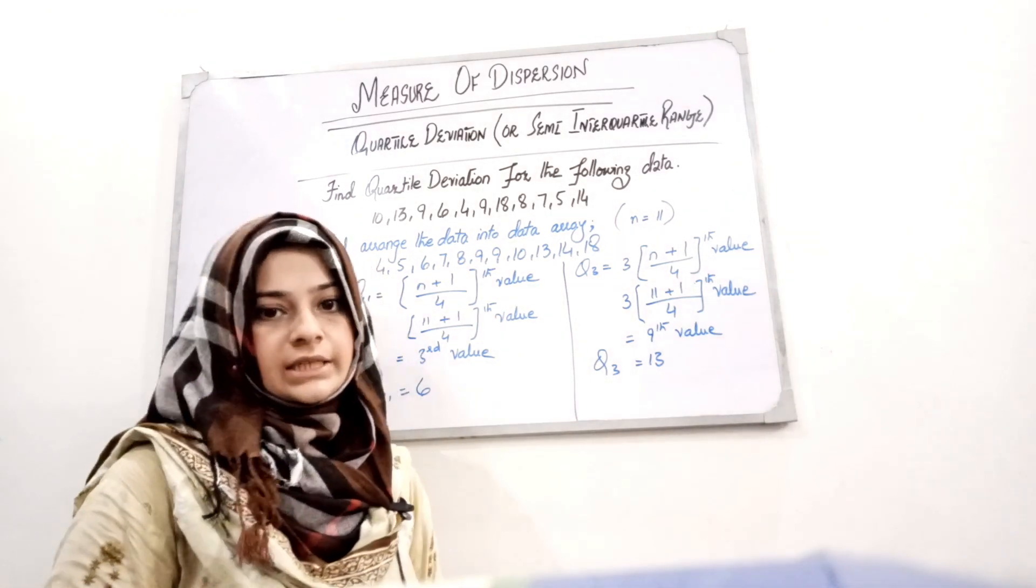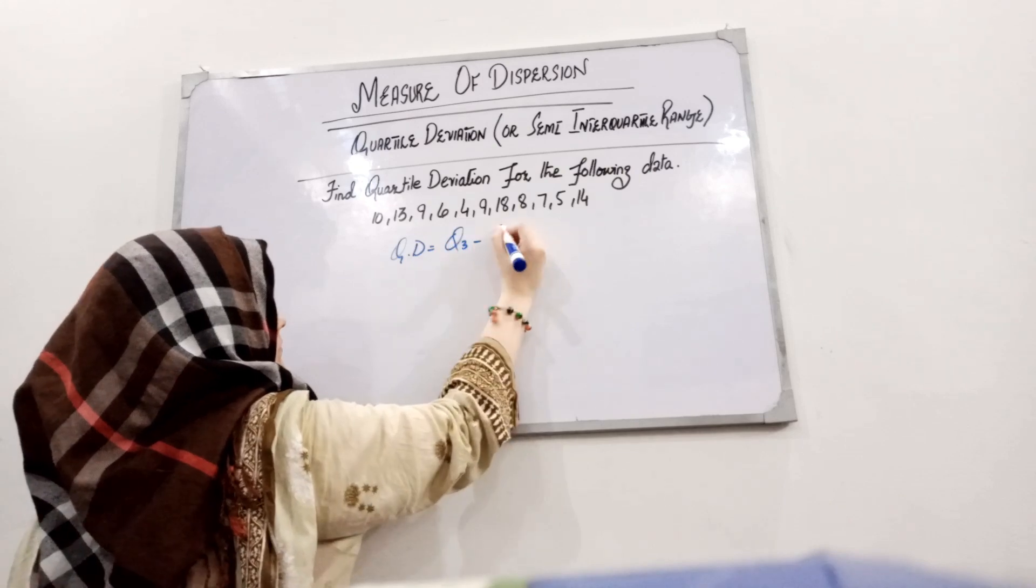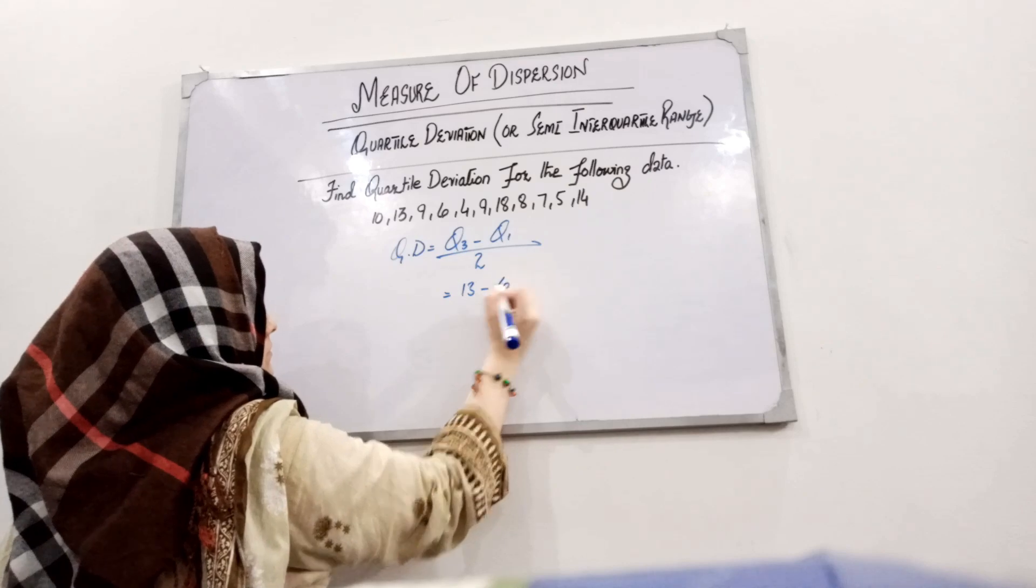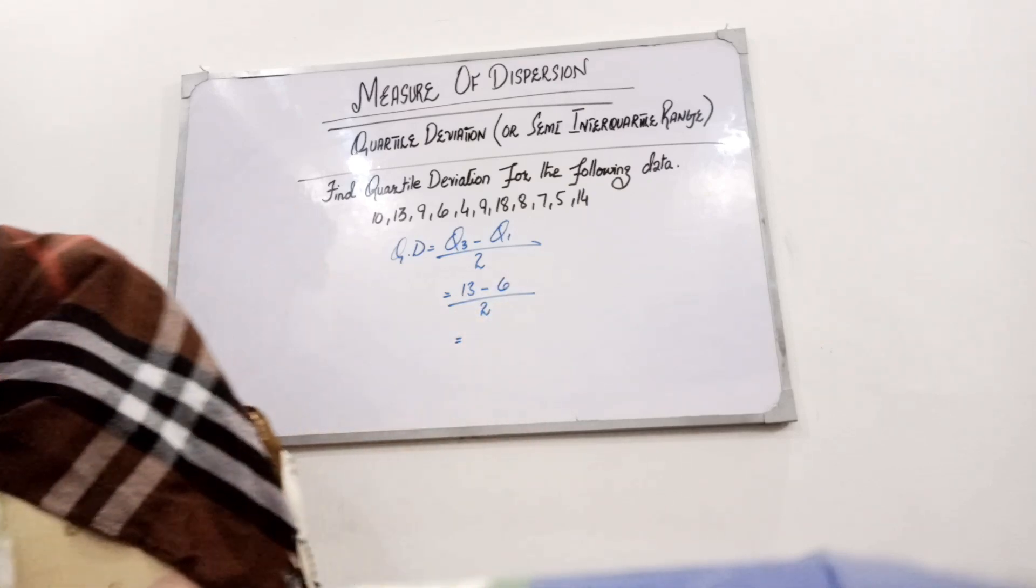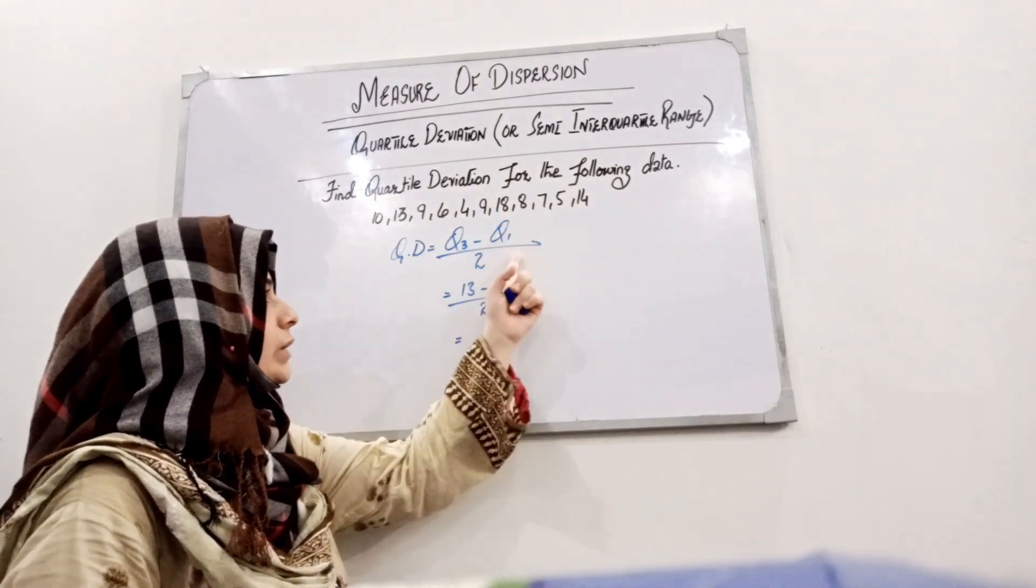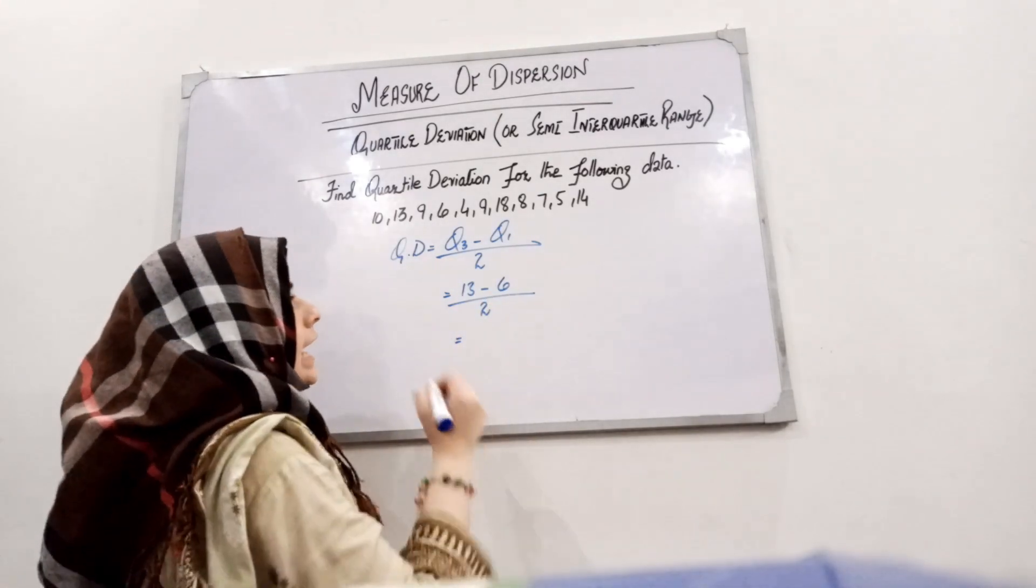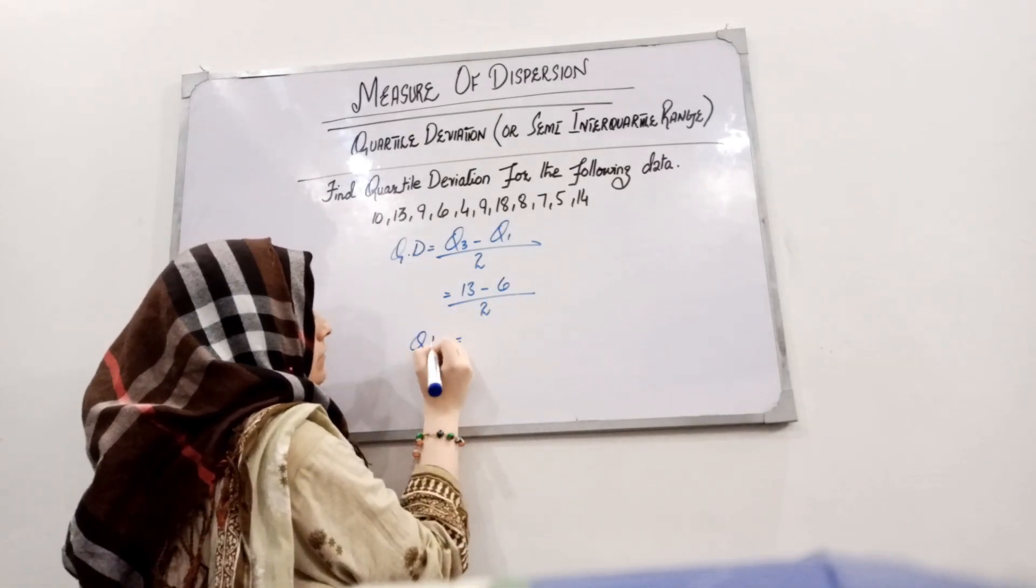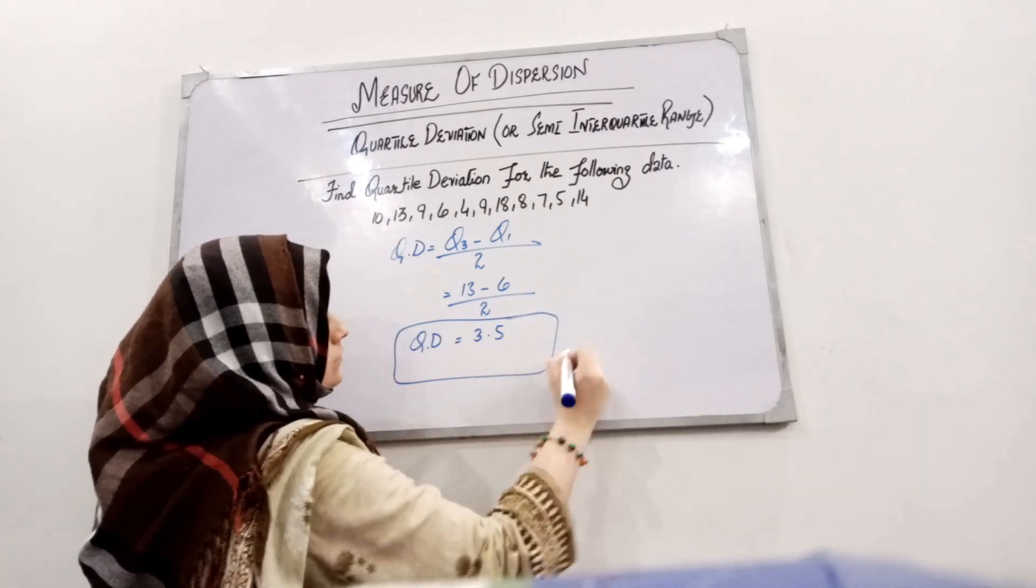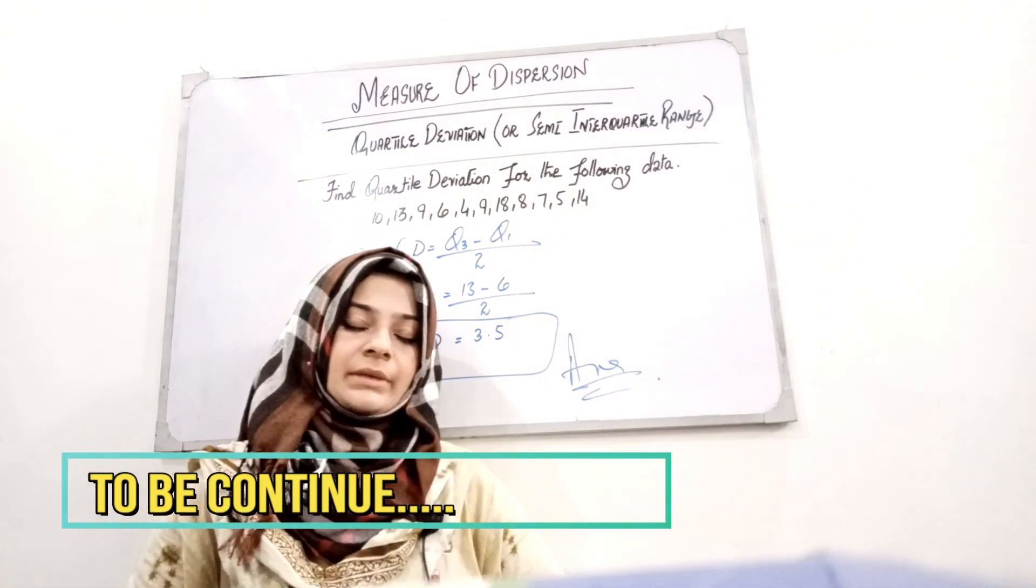can easily find the quartile deviation. Let's see how. The quartile deviation is Q3 minus Q1 divided by 2. Q3 is 13, Q1 is 6, so (13-6) divided by 2 equals 3.5. This is how the quartile deviation can be calculated...